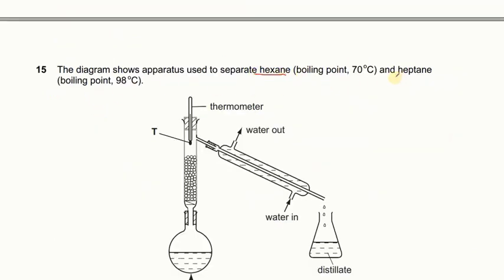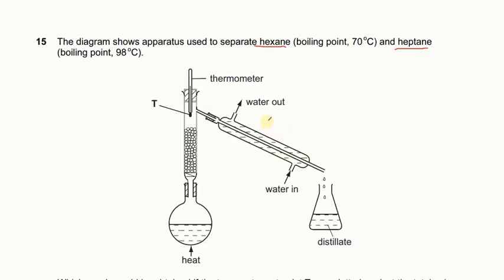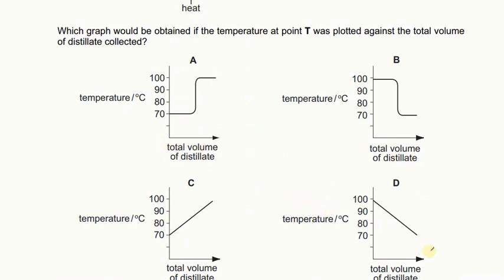Benzene and cyclohexane are both flammable liquids that mix with each other. They have very similar boiling points, making it difficult to separate them by fractional distillation. Fractional distillation is a technique based on differences in boiling points — since their boiling points are very close, separation is difficult. For hexane (boiling point 70°C) and heptane (boiling point 98°C): the distillate collected first is at 70°C, then there is a gap, then more distillate at around 100°C. So A is the right answer for the graph.